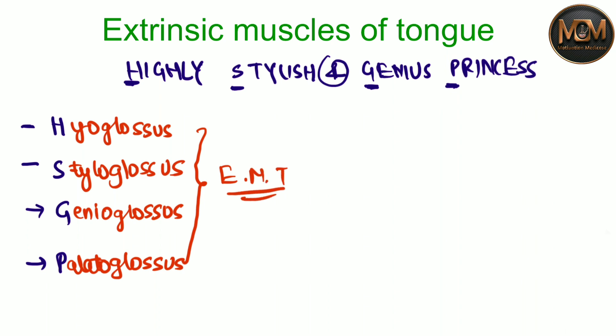With the help of this mnemonic — 'Highly Stylish And Genius Princes' — you can easily remember the muscles. Just consider all the key letters: H from 'Highly,' S from 'Stylish,' G from 'Genius,' P from 'Princes,' and write down the corresponding muscles of the tongue. With the help of this, you can easily learn them.